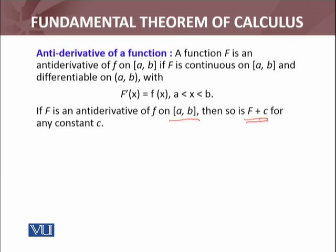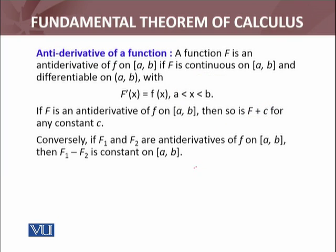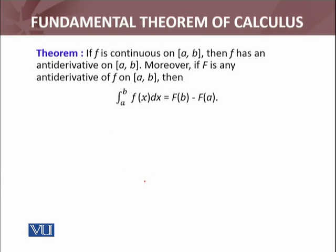Agar c constant ho to F plus c bhi antiderivative hoga f(x) ka. Conversely, if F₁ and F₂ are two antiderivatives of f on the closed interval [a,b], then F₁ minus F₂ is a constant — yeh ek constant function hoga. Agar do antiderivatives hain, unka difference lenge, so that will always be a constant.